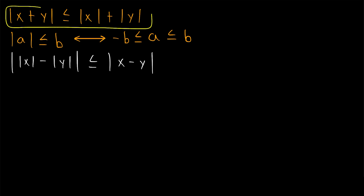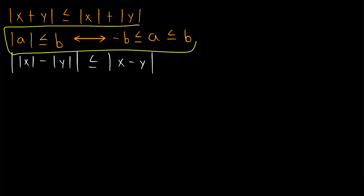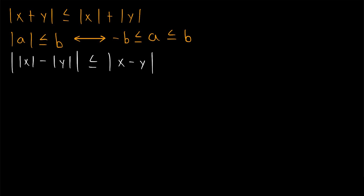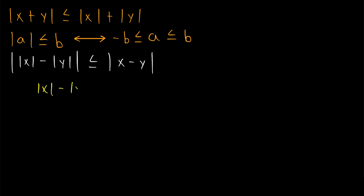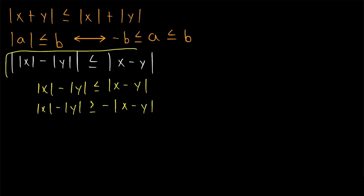For this proof, we'll be using the triangle inequality theorem and a useful supporting result. This result tells us that to prove the absolute value of a number, say A, is less than or equal to some other number, say B, we just have to show that A is between B and negative B. So in order to show that the absolute value of the difference of |X| and |Y| is less than or equal to |X - Y|, we'll show that |X| - |Y| ≤ |X - Y| and that |X| - |Y| ≥ -|X - Y|. By that theorem, we will have proven our desired result.